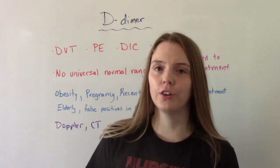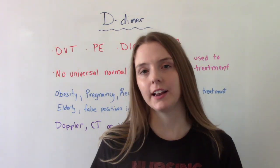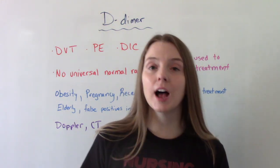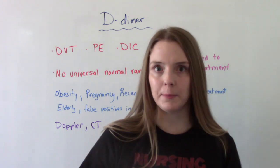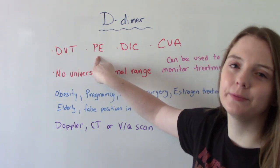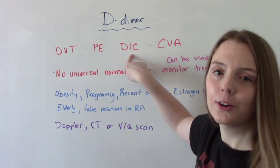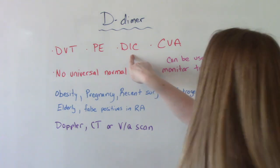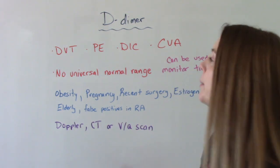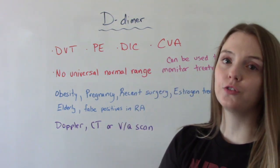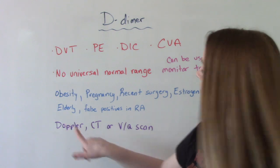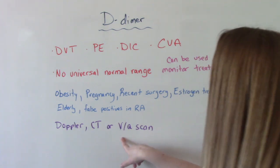While this test is helpful, it cannot show you exactly what kind of clotting disorder you have or where it's located in the body. Some of the clotting disorders this could possibly indicate include a DVT (deep vein thrombosis), a pulmonary embolism, DIC (disseminated intravascular coagiopathy), and a stroke. It cannot tell you specifically what you have, but it can lead to follow-up testing such as a Doppler ultrasound, a CT scan, or a VQ scan.